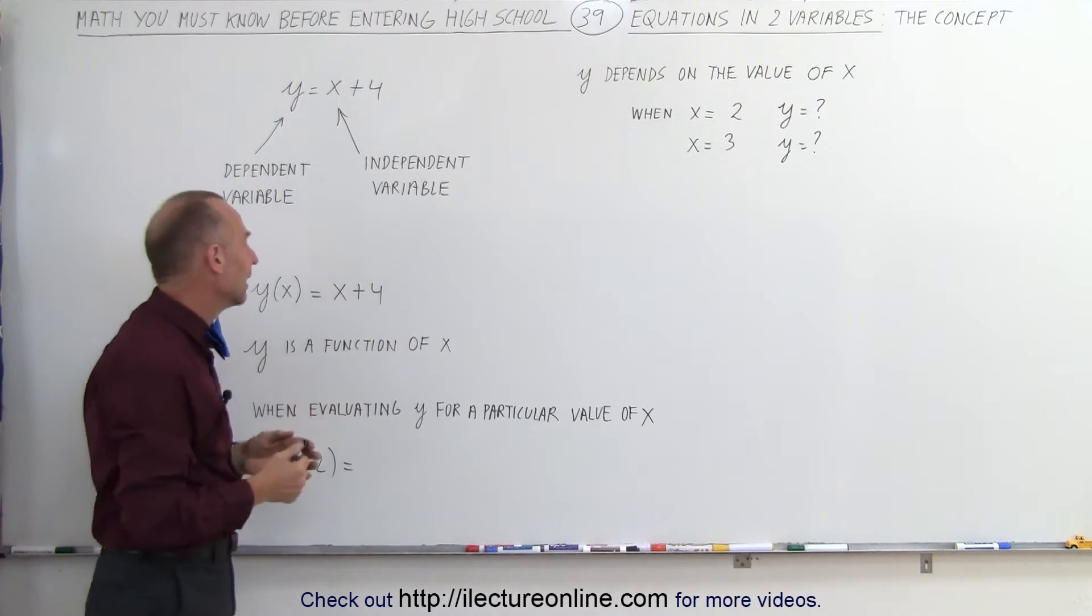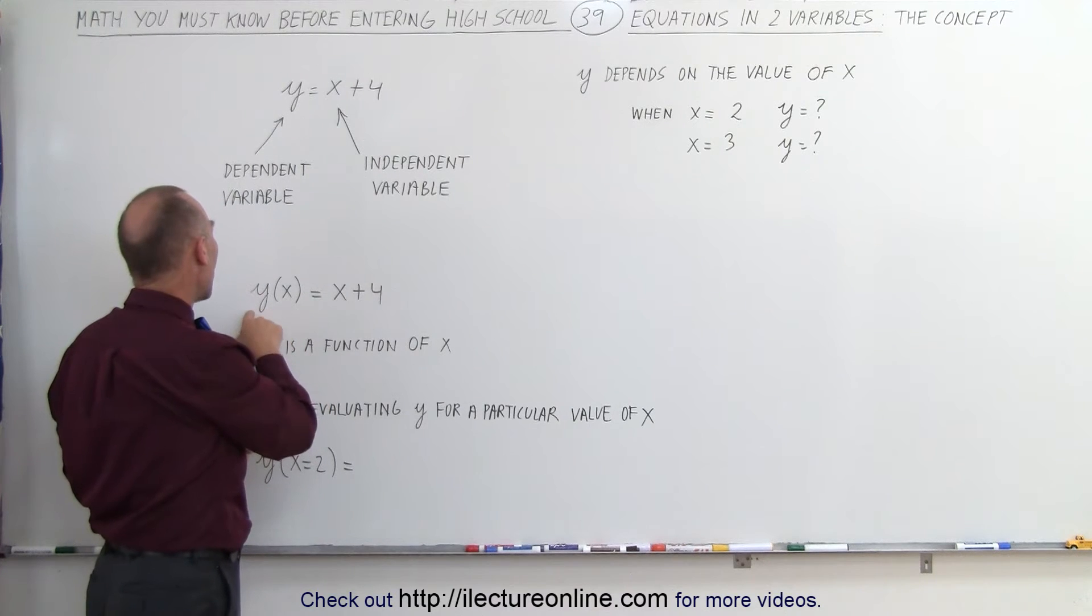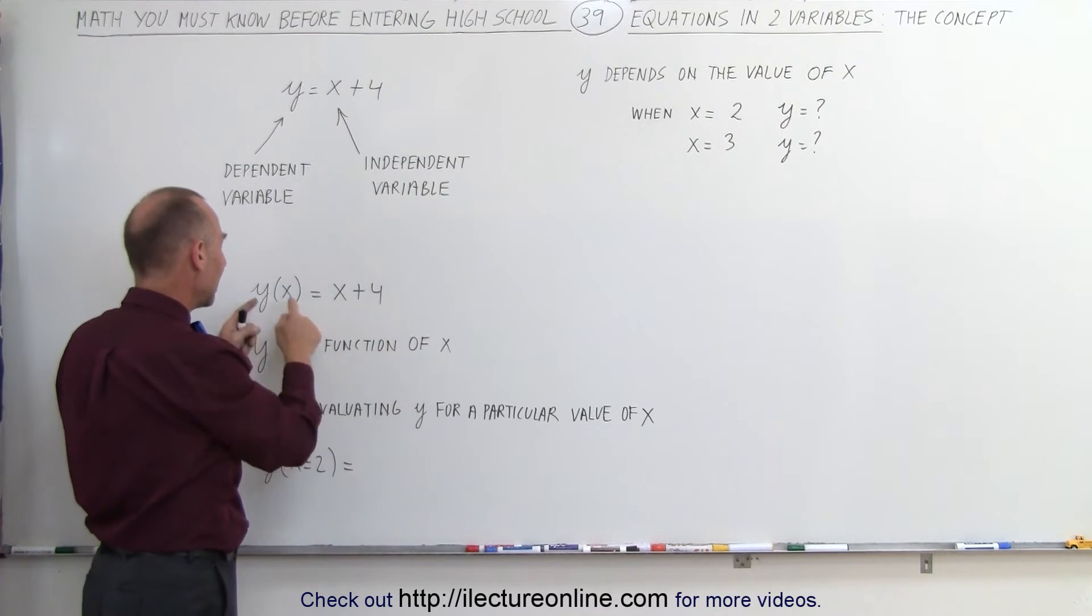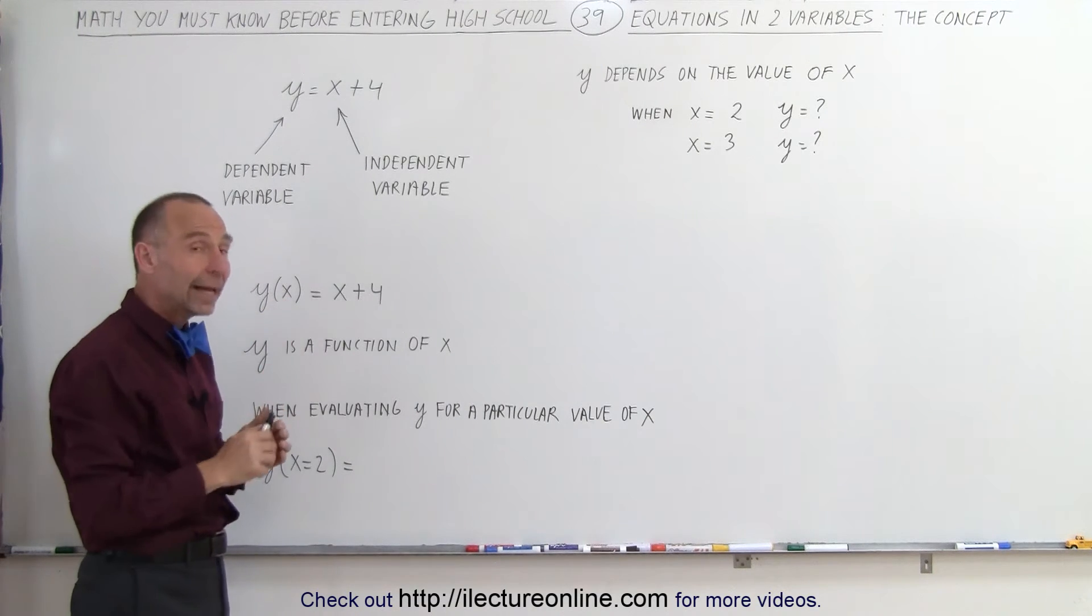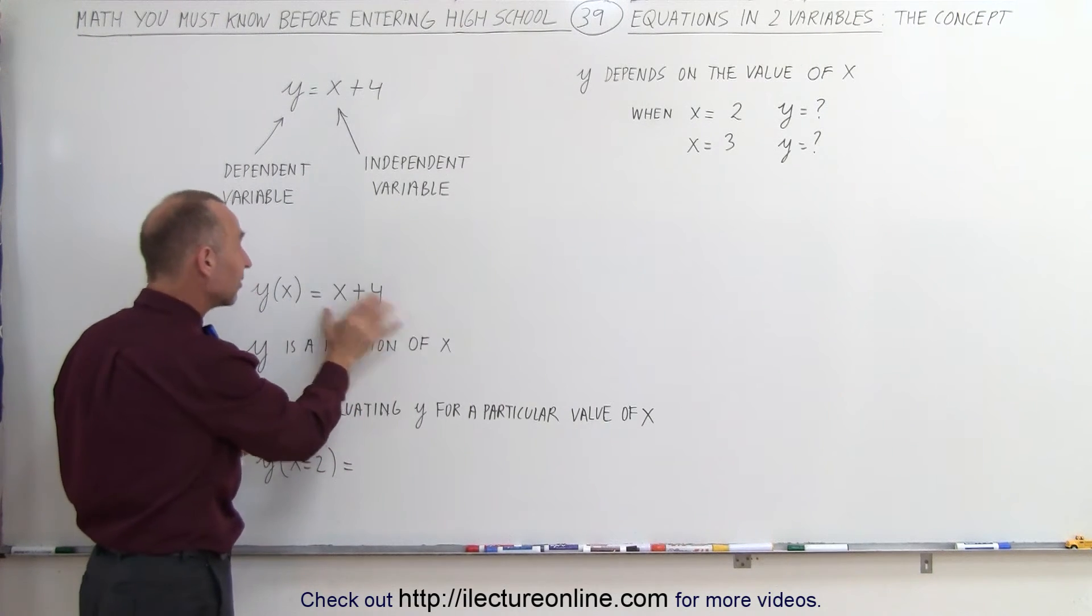Another way of writing that is as follows. We can say y is a function of x. And then we can write y with parentheses and put the value of x in there. This indicates that this variable y depends on this variable x, and this is how it depends on it.